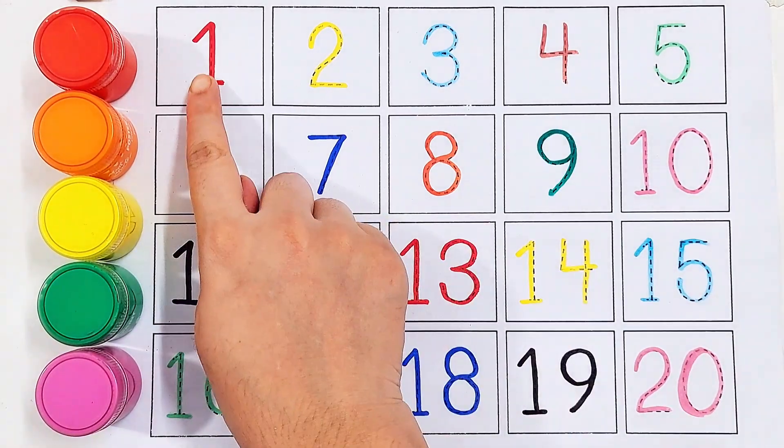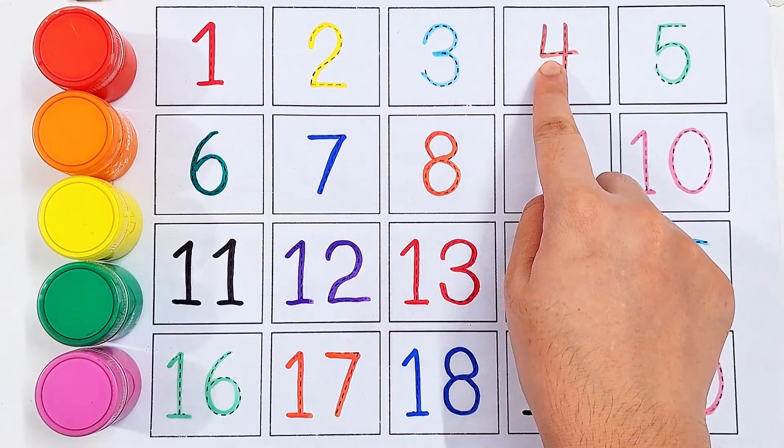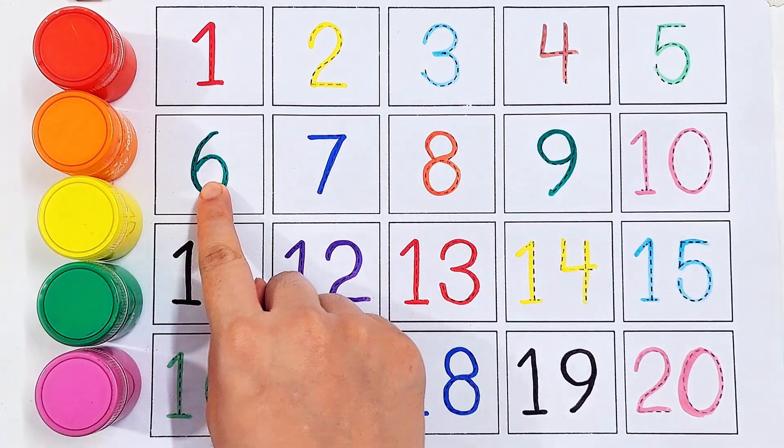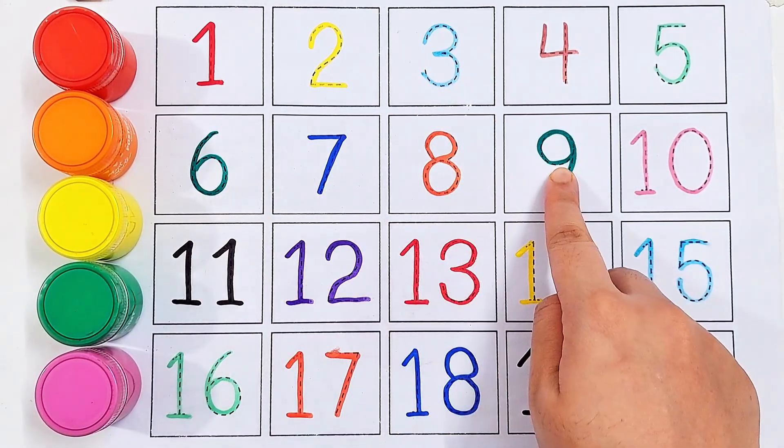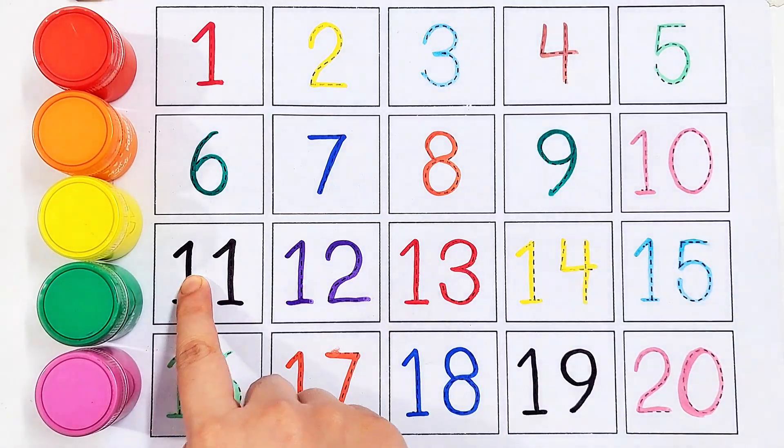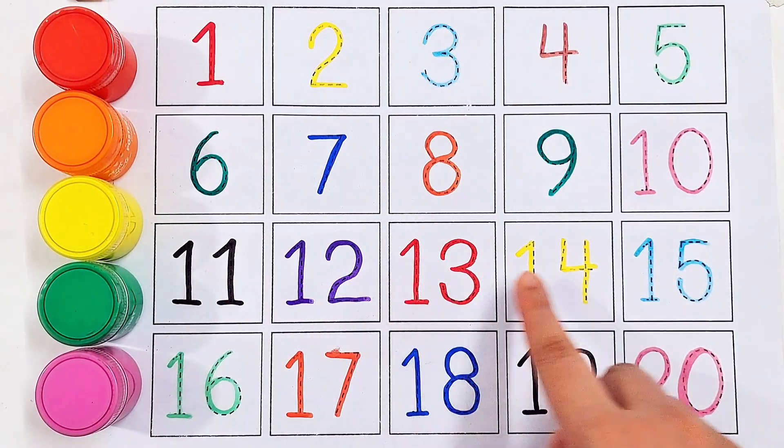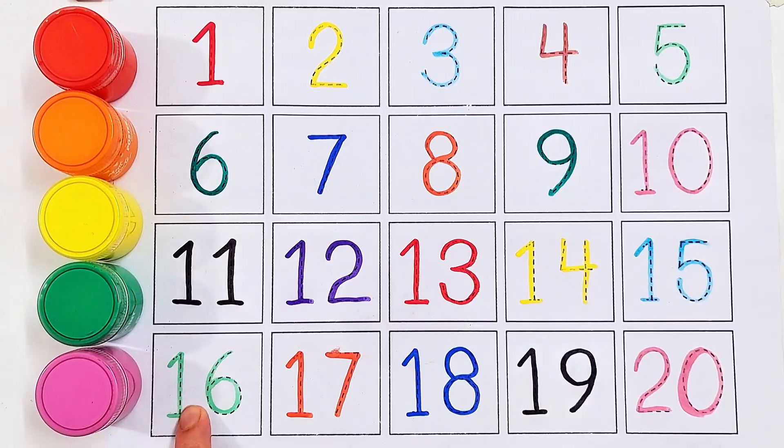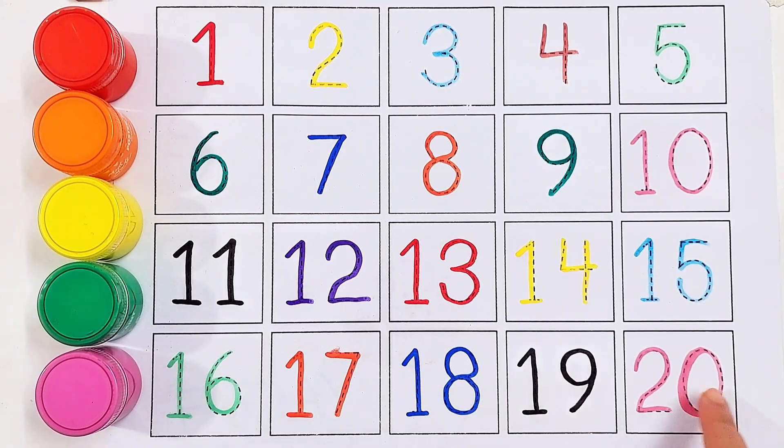Number 1, 2, 3, 4, 5, 6, 7, 8, 9, 10, 11, 12, 13, 14, 15, 16, 17, 18, 19, 20.